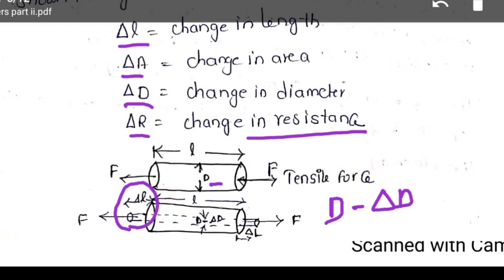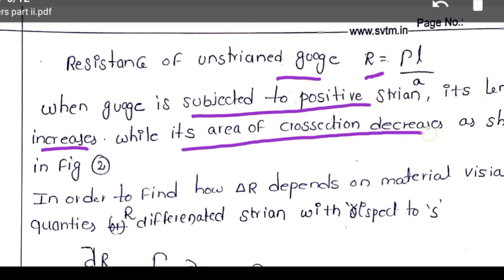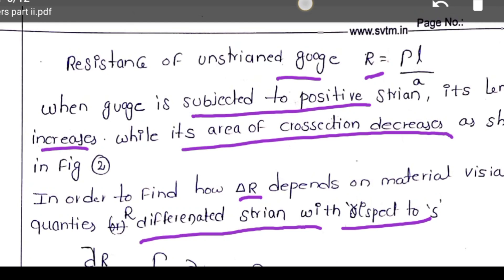These are the terms we assume to derive gauge factor. Normally, the resistance of the material before applying the strain — unstrained gauge — is R equal to rho L by A. That is, the resistance of a material is rho L by A. When the gauge is subjected to positive strain, its length increases while its area of cross-section decreases. In order to find how delta R responds on the material, the visible quantities are differentiated with respect to S.